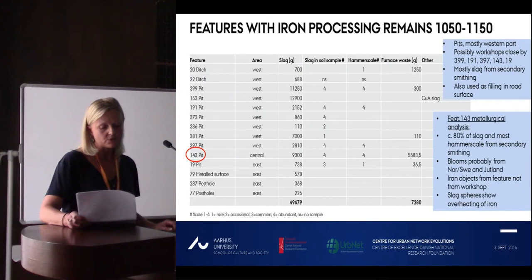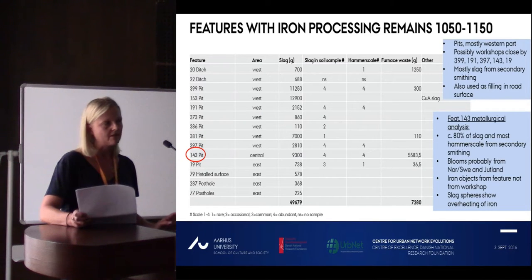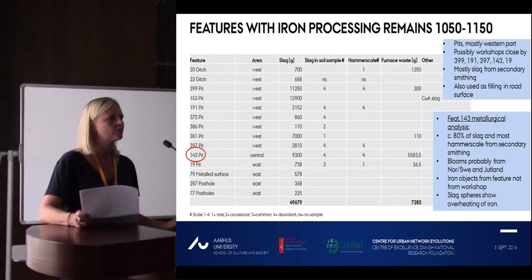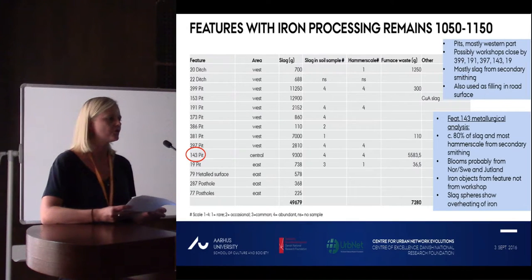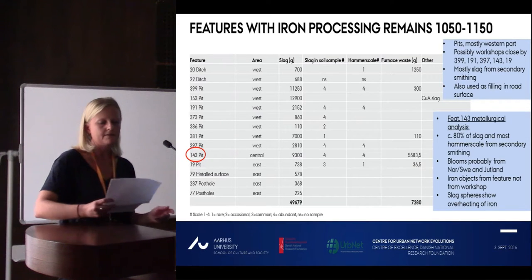Feature 143 pit was selected for metallurgical analysis. About 80% of the slag and most hammerscale come from secondary smithing and the rest from primary smithing. Everything is from bloomers, from simple smithing. Analysis showed that the blooms were probably from Norway, Sweden, and western Jutland. The iron objects found in the feature were not produced in these workshops. Slag spheres indicate that the iron had been overheated in the smithing process.